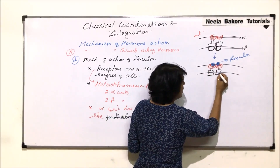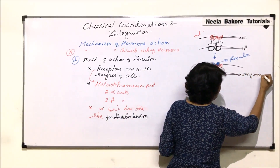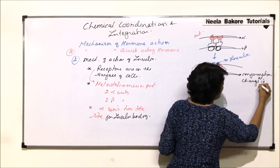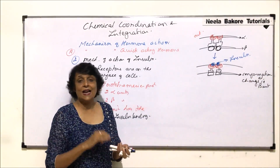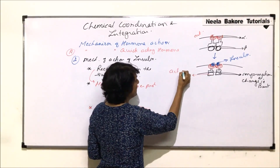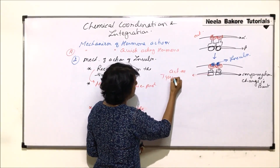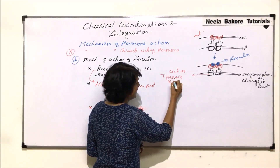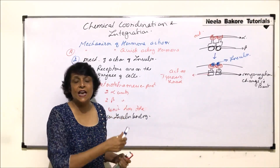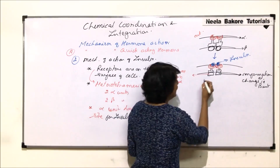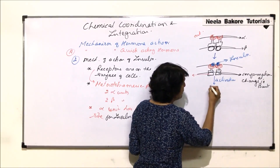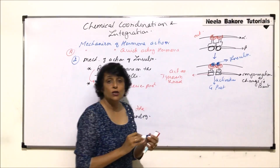As soon as insulin binds to the alpha unit, the beta unit undergoes a conformational change. Instead of its original structure, the beta unit now adopts a new conformation, and as a result of this conformational change, it starts to act as tyrosine kinase.